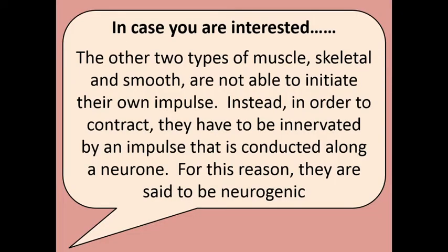Skeletal and smooth muscles cannot initiate their own impulse — in order for them to contract, they have to be told to via an electrical impulse conducting along the neuron. They are said to be neurogenic. Cardiac tissue, by contrast, is myogenic — it does it itself.